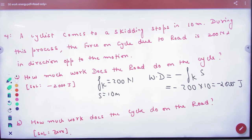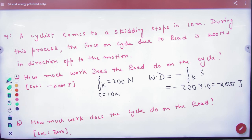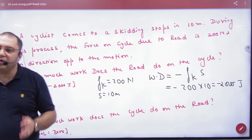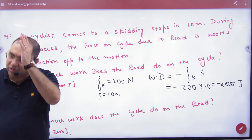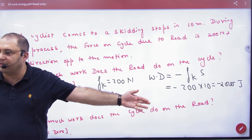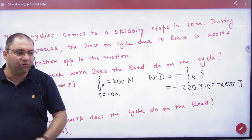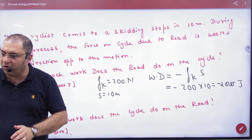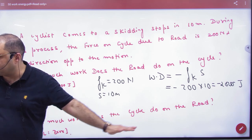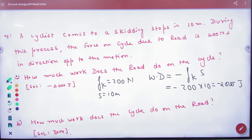We put the work done in friction. Next question: how much work does the cycle do on the road? Because its weight acts downward and the normal reaction acts upward, while displacement is horizontal — so the angle is 90 degrees. It is a case where force and displacement are perpendicular.